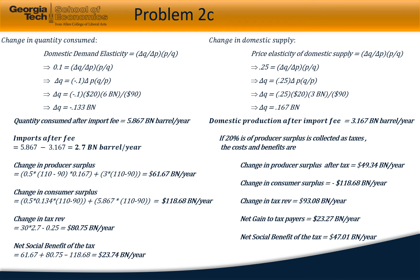The producer surplus will increase by 61.67 billion dollars per year and the consumer surplus will reduce by 118.68 billion dollars per year — a lower shift than before. The resulting tax revenue is 80.75 billion dollars per year and the net social benefit is now 23.74 billion dollars per year, which is a reversal from the earlier scenario. If the government collects 20% of producer surplus as taxes, the resulting net benefits increase to 47.01 billion dollars per year.